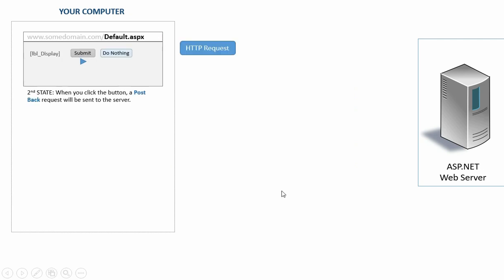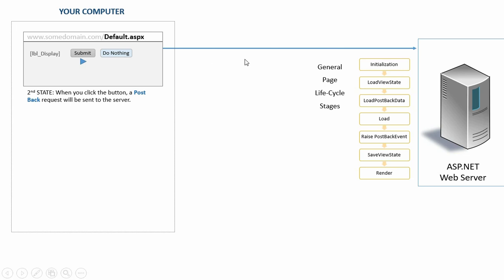Our page is loaded to the browser. Let's click the submit button and see what happens. Clicking the submit button will create a postback request to the server. Postback requests are very commonly created by button clicks. However, other controls can also result in postback requests. For example, changing the selected item in a drop-down list or in a checkbox will also cause a postback event. So briefly, after a page is loaded to the browser, any further requests from that page sent to the server are actually a postback request.